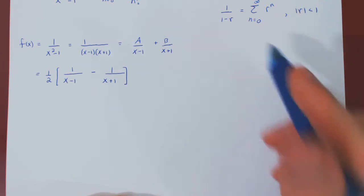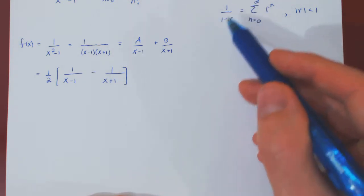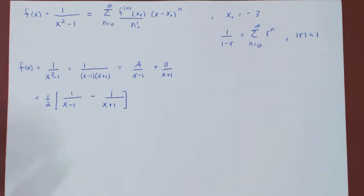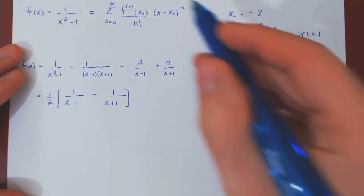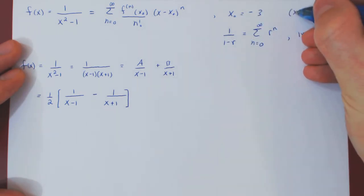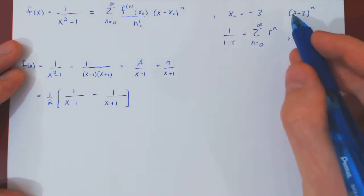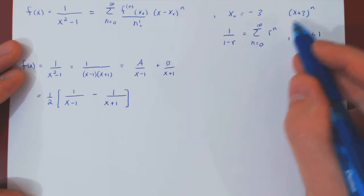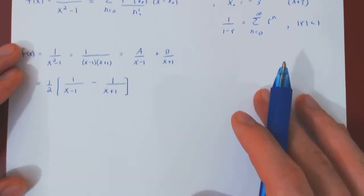Now we can tweak both simpler rational functions into the form 1 over 1 minus r, so as to obtain an infinite series. Because we want the center of the expansion to be negative 3, we want powers of x minus (negative 3), therefore of (x plus 3). This will be our x minus x0, so we want terms of the form (x plus 3) to the n in the series. This means r must contain the term (x plus 3).